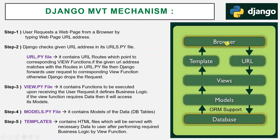The first step is opening the browser and typing the web page address. Then Django will check the user-provided web page address in its URL file. Django has one URL file — all these files will be discussed. Let's first understand this block diagram, then we will go to the files.